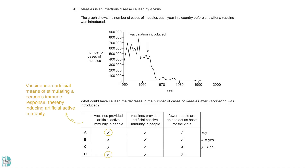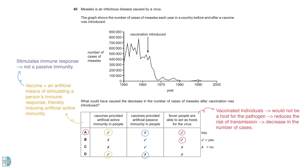A vaccine is an artificial means of stimulating a person's immune response, thereby inducing artificial active immunity. The involvement of an immune response indicates that it is not a passive immunity. A vaccinated individual who successfully acquires immunity would not be a host for the pathogen. This reduces the risk of transmission, resulting in a decrease in the number of cases.